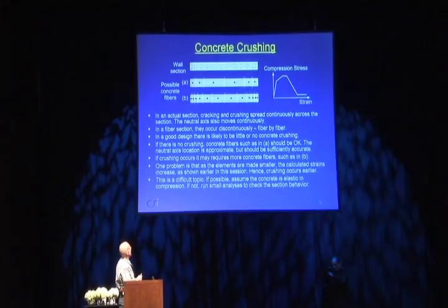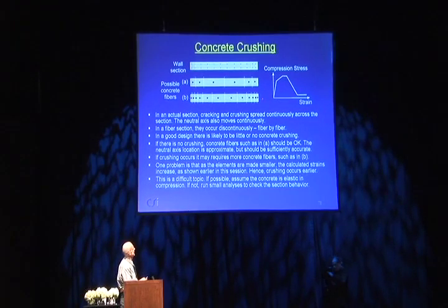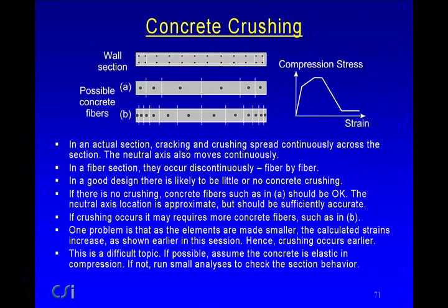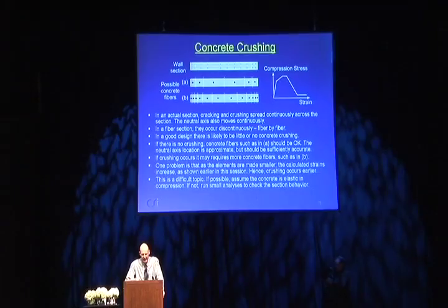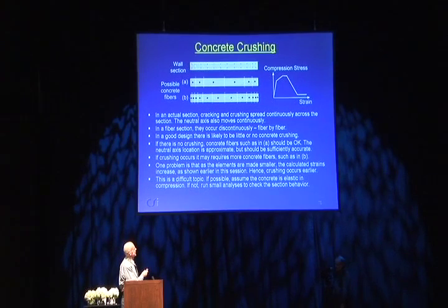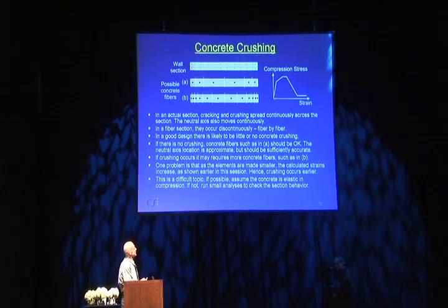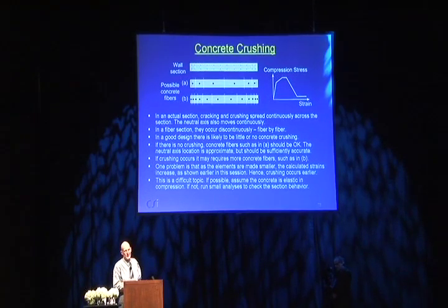Regarding concrete crushing: in an actual section, cracking and crushing spread continuously across the section so the neutral axis moves continuously. In a fiber section it goes discontinuously as each fiber changes state and the neutral axis jumps from point to point. If there's no crushing it's probably okay to use the current fiber discretization. If there's crushing you may need more elements, particularly smaller fibers towards the boundaries of the wall, and you should probably include strength loss in the concrete stress-strain relationship. Crushing is not a reliable way of dissipating energy — a design that causes significant crushing is not a good ductile design.